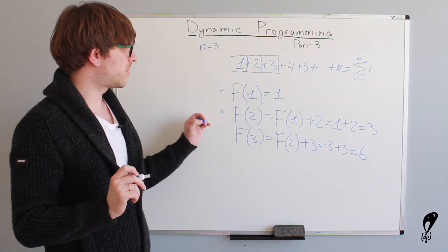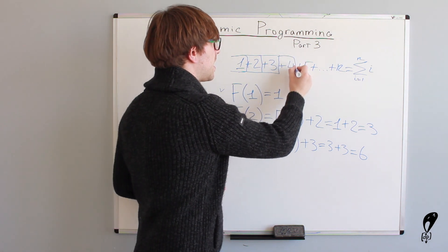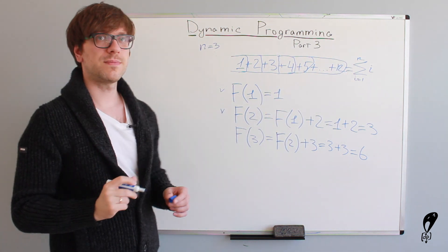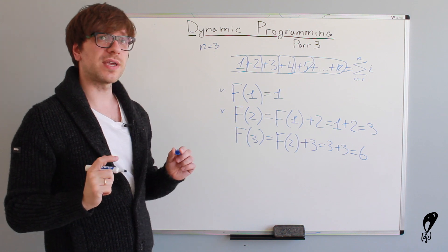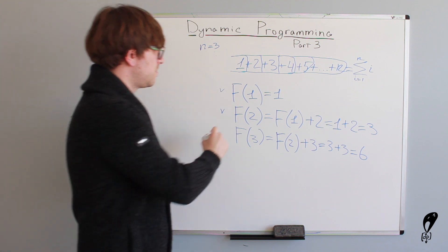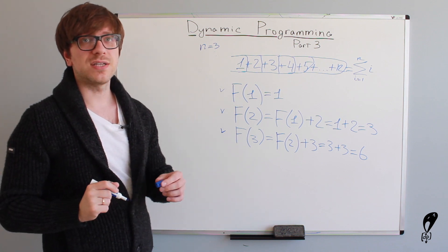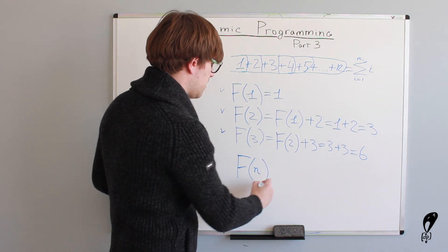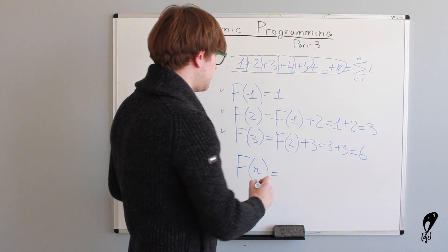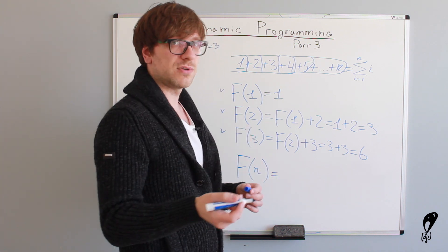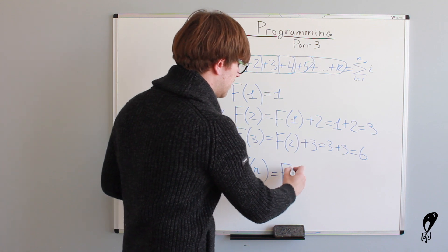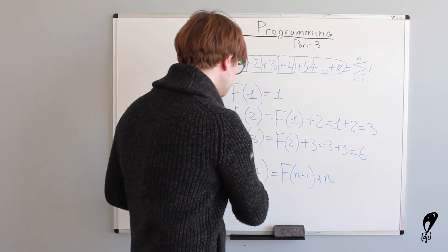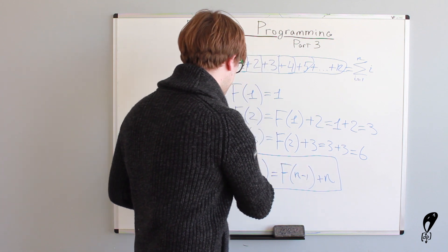Now, we can keep doing the same operation again and again and at some point in time, we will calculate f of n. And just by looking at the first few solutions, we can devise general formula for this problem, which is f of n. And this equals to the sum of previous elements, which is f of n minus 1 plus the element itself, plus n.